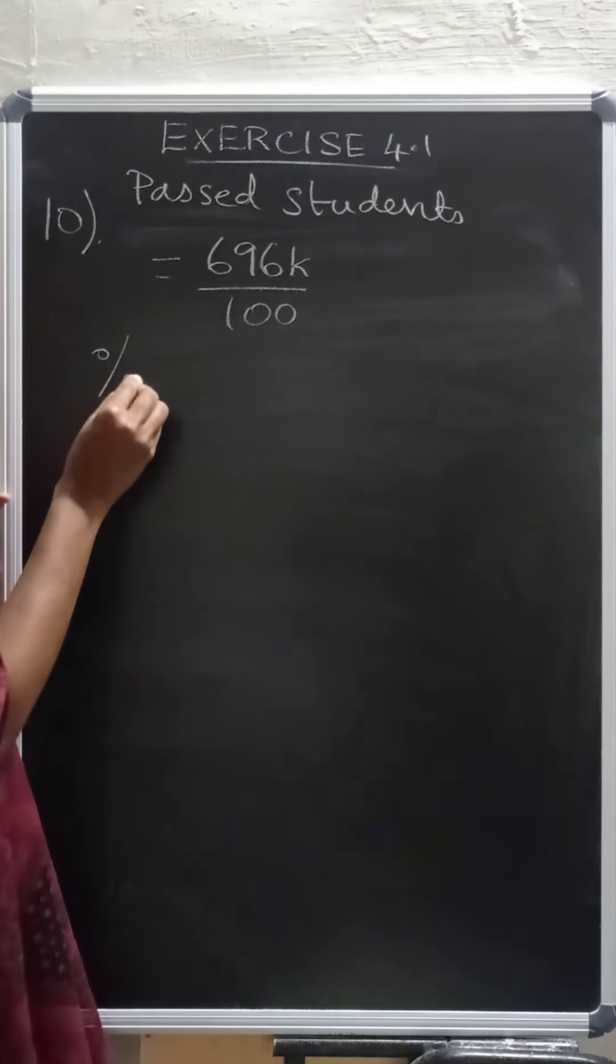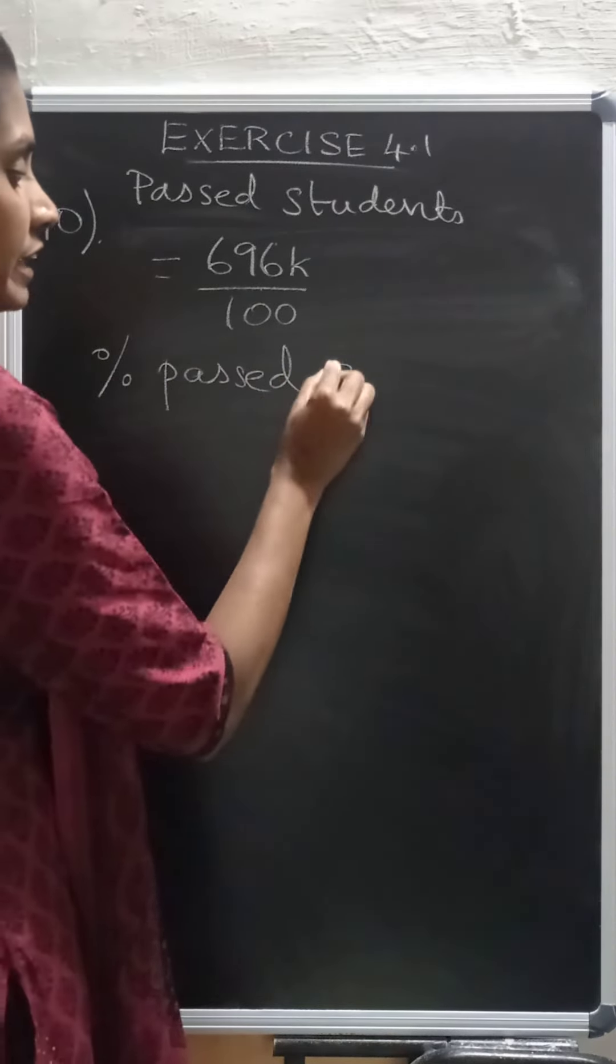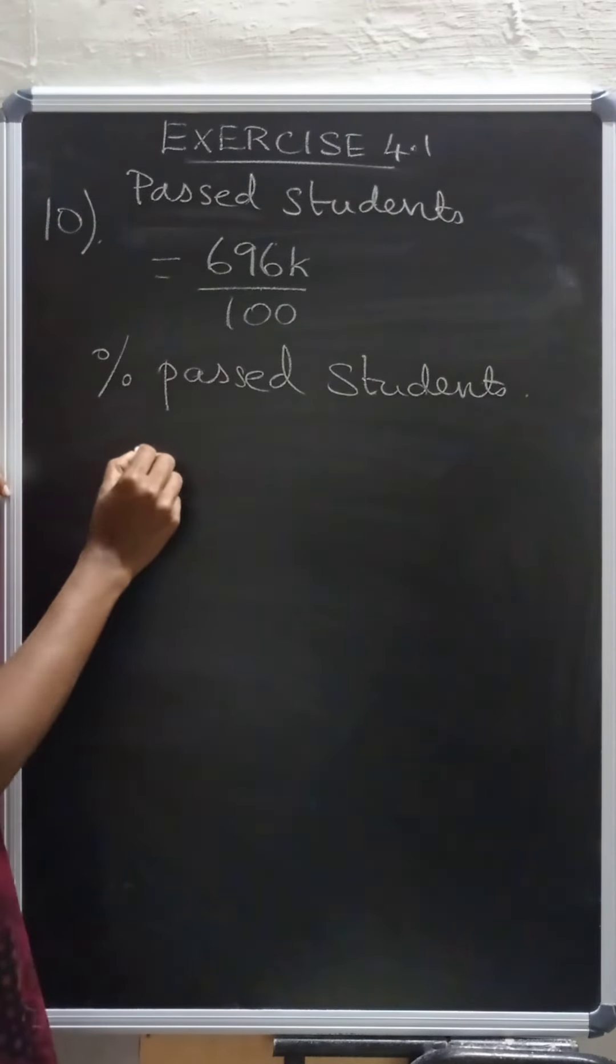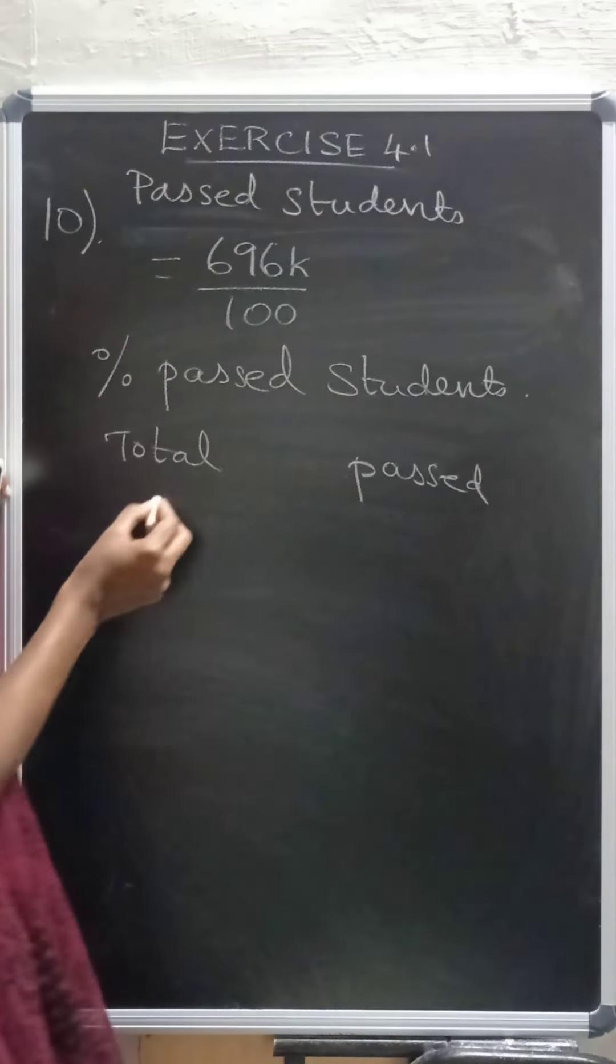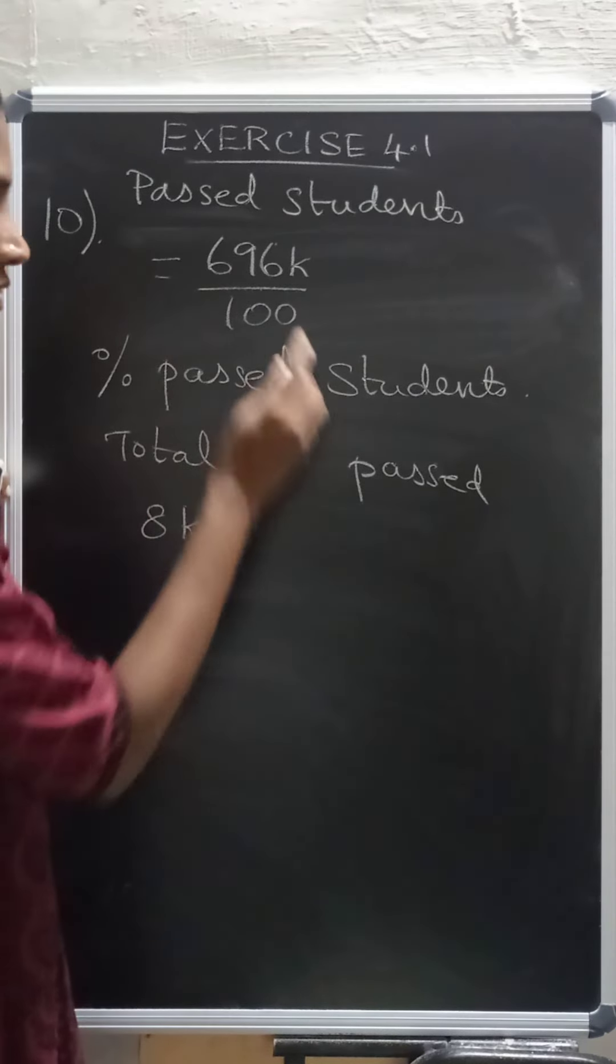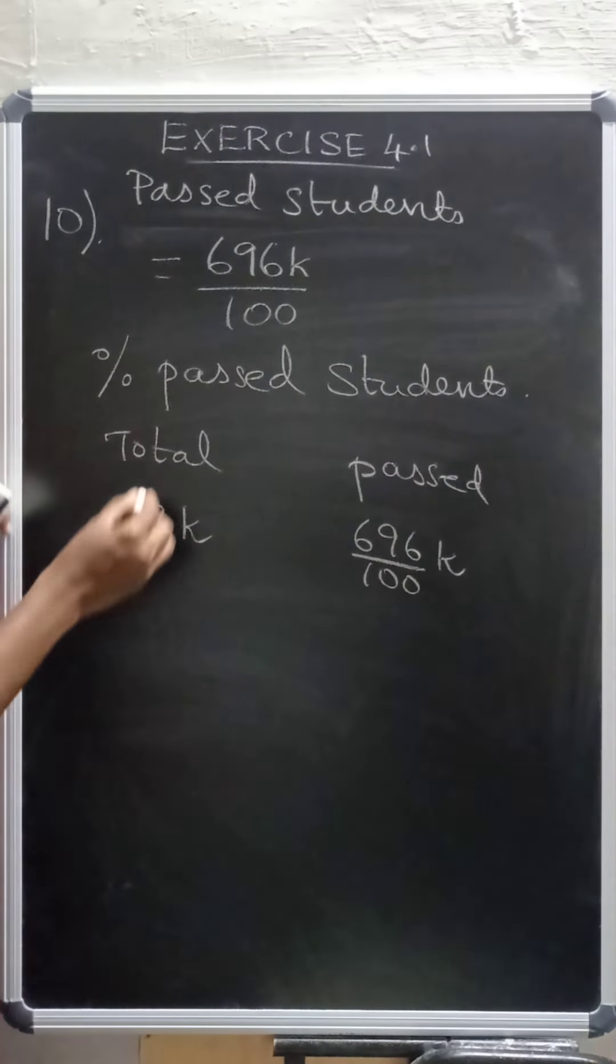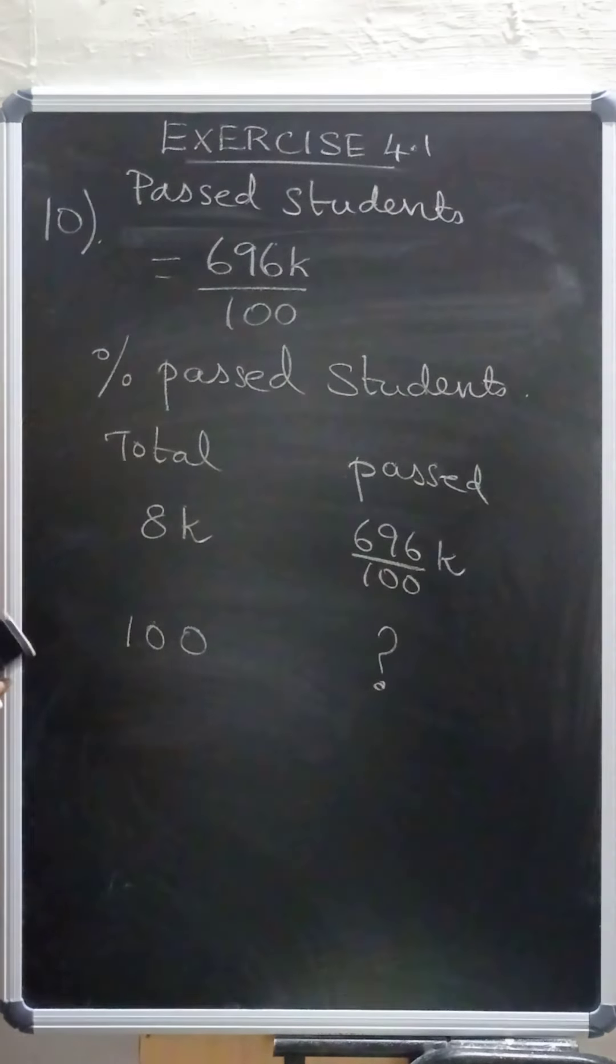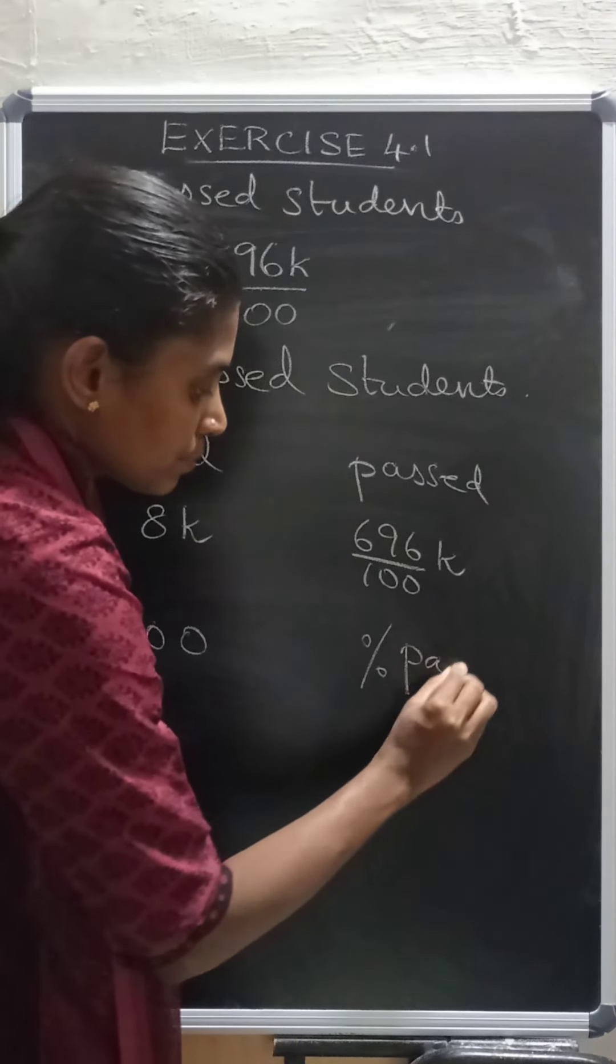In the question, they have asked you to find the percentage of the passed students. Right? So see, total number of students and passed students here. So total number of students is what? 8k. Out of 8k, how many passed? 696k divided by 100 passed. So if the total is 100, how many would have been passed? So instead of this question mark, I am taking percentage passed.